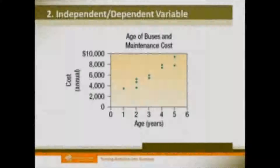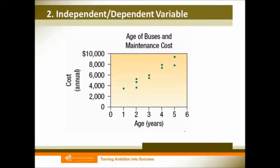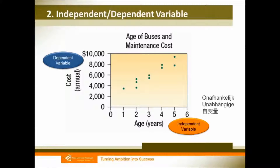After knowing the scatter diagrams, now let's go on with independent and dependent variables. We always put independent variables as our x variable, and we call our y variables our dependent variables. So in the case of the correlation between age of buses and maintenance cost, the age of buses will be our independent variable, while the maintenance cost will be our dependent variable.